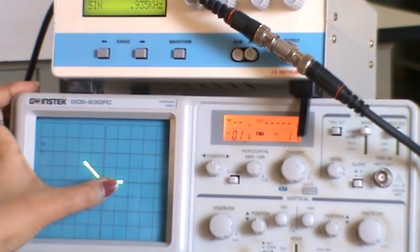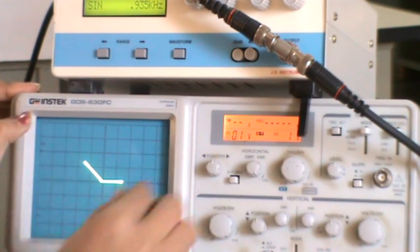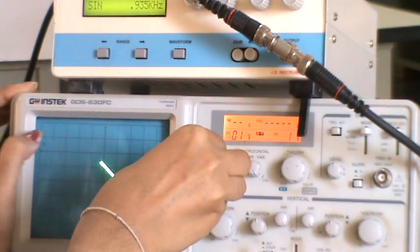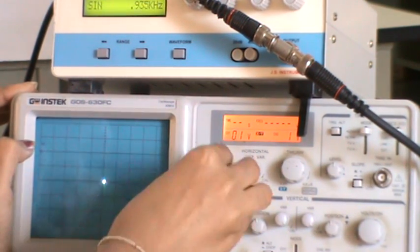You can see the transfer characteristics. This is 0.15, this will be minus 0.15, and this you can measure, it is around 1.4. This is how to measure the transfer characteristics.